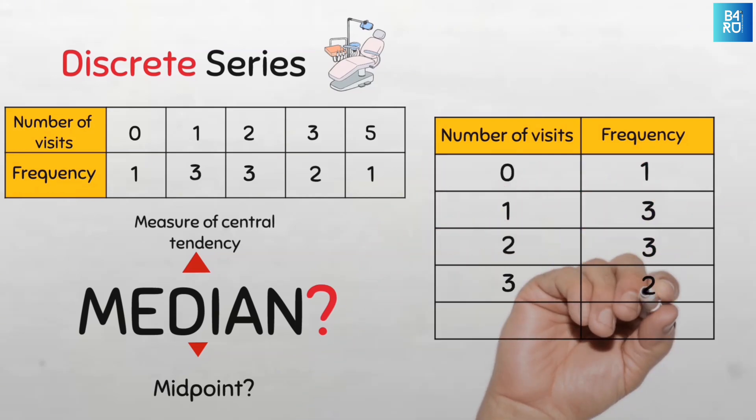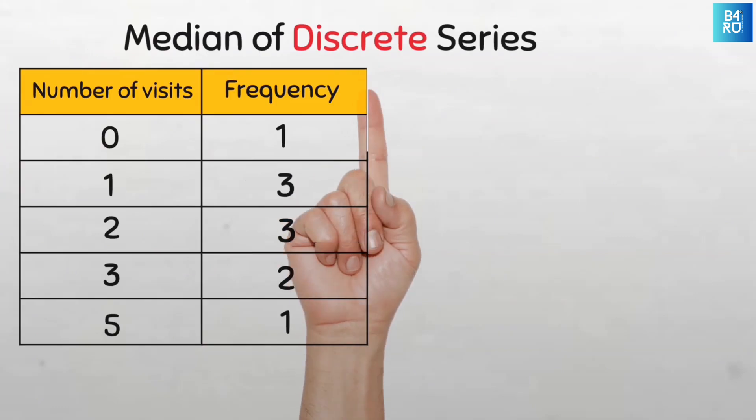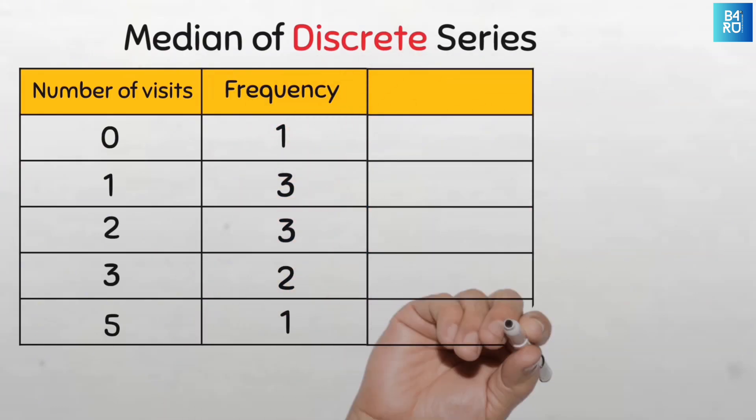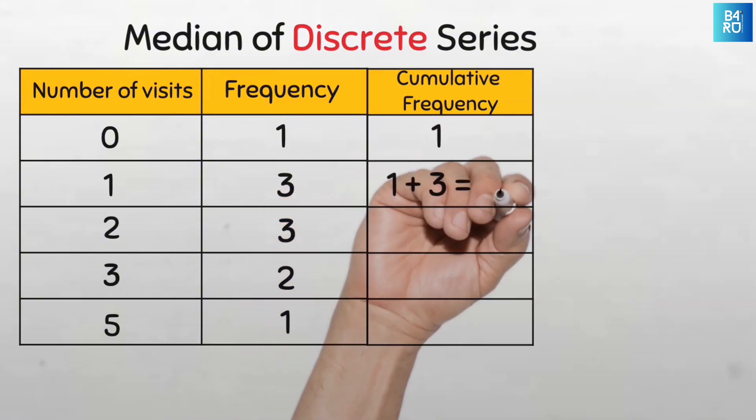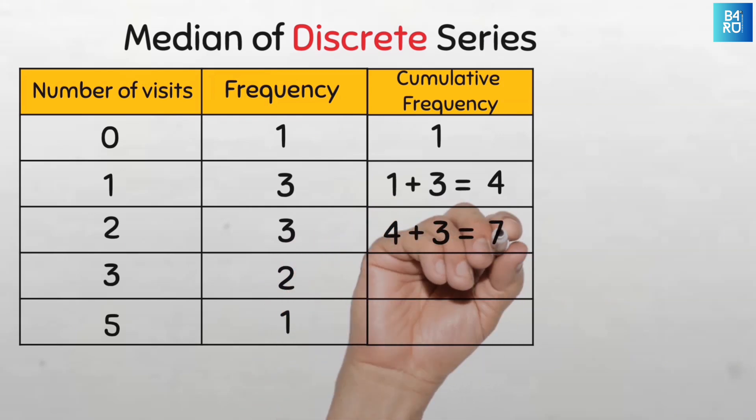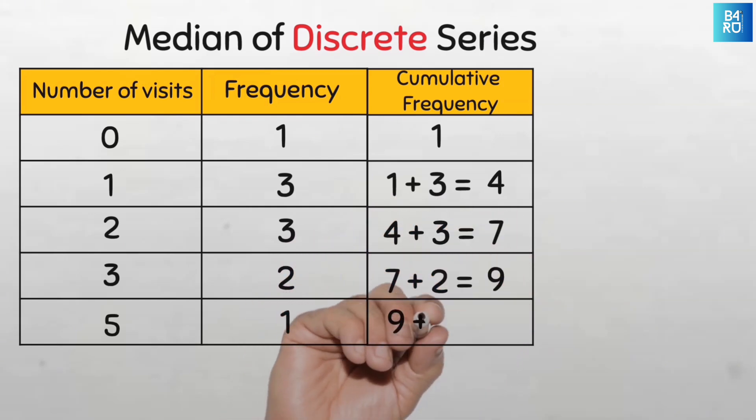To find the median for discrete series, we will need to first compute the cumulative frequency. So let's create a new column here and we'll call this cumulative frequency. This will be 1, then the next will be 1 plus 3, so the cumulative frequency is 4. Then 4 plus 3 is 7, 7 plus 2 is 9, and 9 plus 1 is 10.